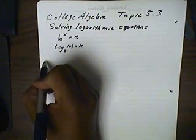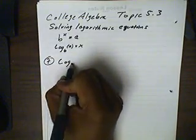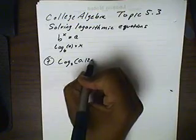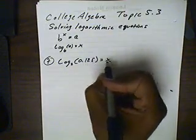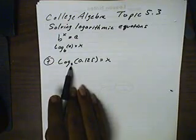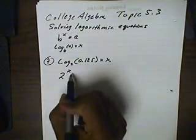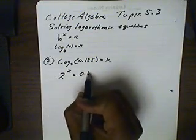Number 7. We have log base 2 of 0.125 equals x. From here we're going to convert this. This will be our base of 2, the x will be our power, and this will all equal 0.125.